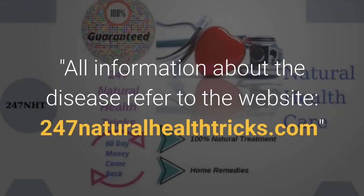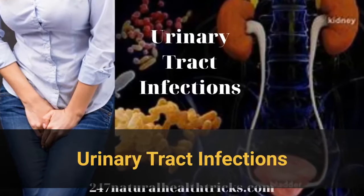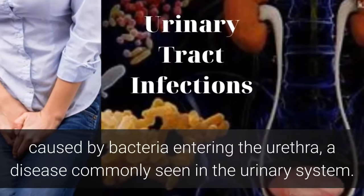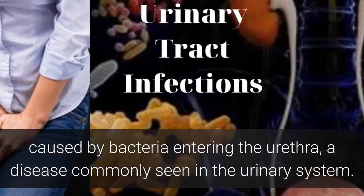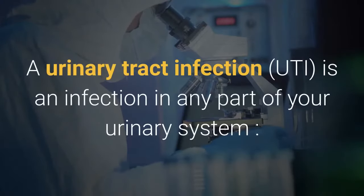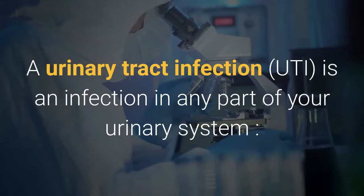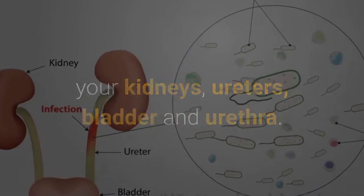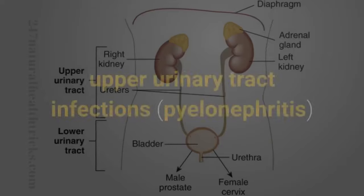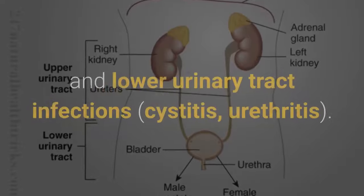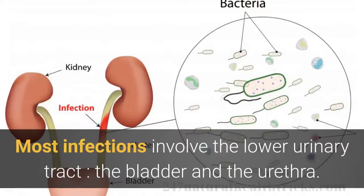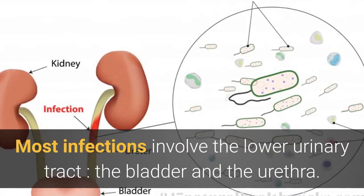Urinary tract infection is an inflammation caused by bacteria entering the urethra, a disease commonly seen in the urinary system. A urinary tract infection is an infection in any part of your urinary system — your kidneys, ureters, bladder, and urethra. Urinary tract infections are divided into upper and lower urinary tract infections, including cystitis and urethritis. Most infections involve the lower urinary tract, the bladder and the urethra.